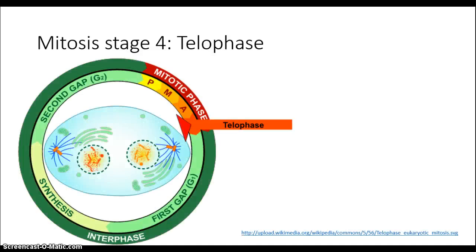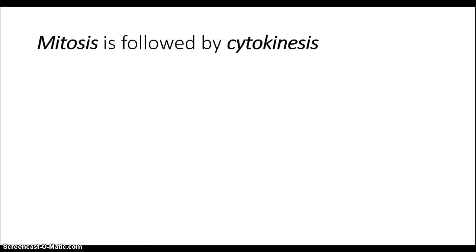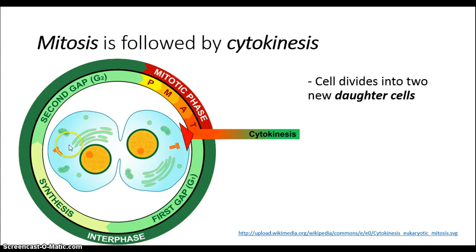The last stage, telophase, is where you start to see the spindle fibers disappearing and the new nuclei begin to form. The chromosomes too begin to uncondense, back into chromatin — this diffuse, spread-out DNA. Mitosis is then followed by cytokinesis, the last part, where the rest of the cell is split — the organelles, the cytoplasm, the cell membrane — so that you form two new daughter cells.